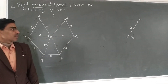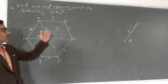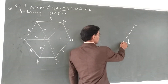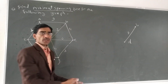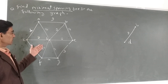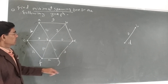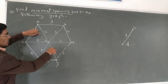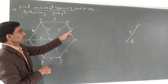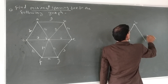अब D और B दो vertex हैं spanning tree में। इन दोनों से जुड़े सारे edges देखिए। B के साथ 9 और 4 हैं; D के साथ 5, 6, 7, 8, 10 बचे हैं। इन सब में minimum 4 है जो B और E को connect करता है, तो हम BE को लेते हैं।